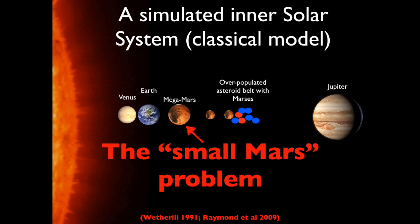This problem kept happening over and over in studies of the classical model, and became called the small Mars problem — meaning that the Mars in our simulations are much bigger than the real Mars, and we are struggling to understand why Mars is so much smaller than Earth.